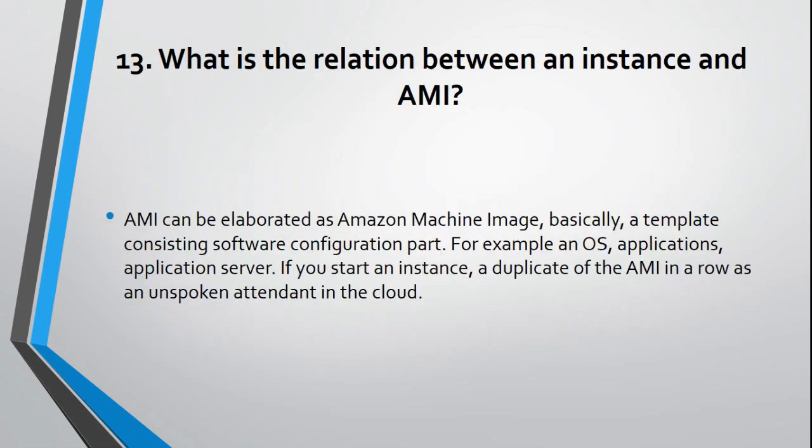Question 13: What is the relation between an instance and AMI? AMI can be elaborated as Amazon Machine Image – basically a template consisting of a software configuration part, for example an OS, Applications, and Application Server. When you start an instance, a duplicate of the AMI runs as a virtual server in the cloud.